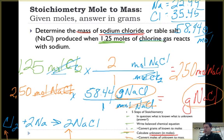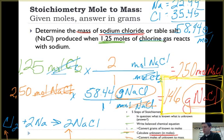That's what I want my answer in. So I'm going to take my 2.50 times 58.44. That equals 146.1, 146 with significant figures. And this, after all that mess, is my final answer. 146 grams of sodium chloride are produced when I start with 1.25 moles of chlorine gas.